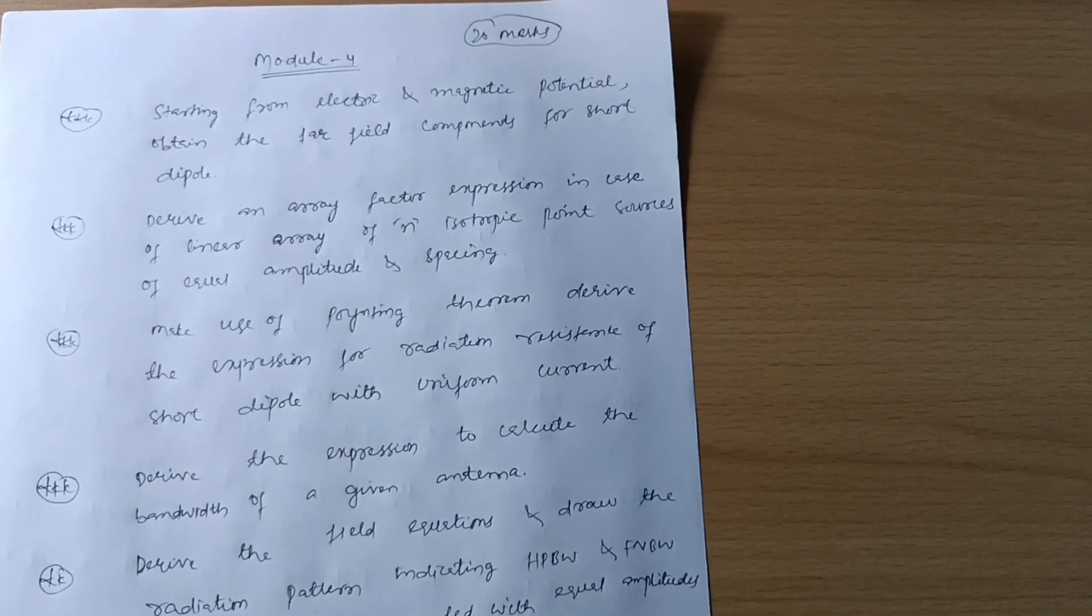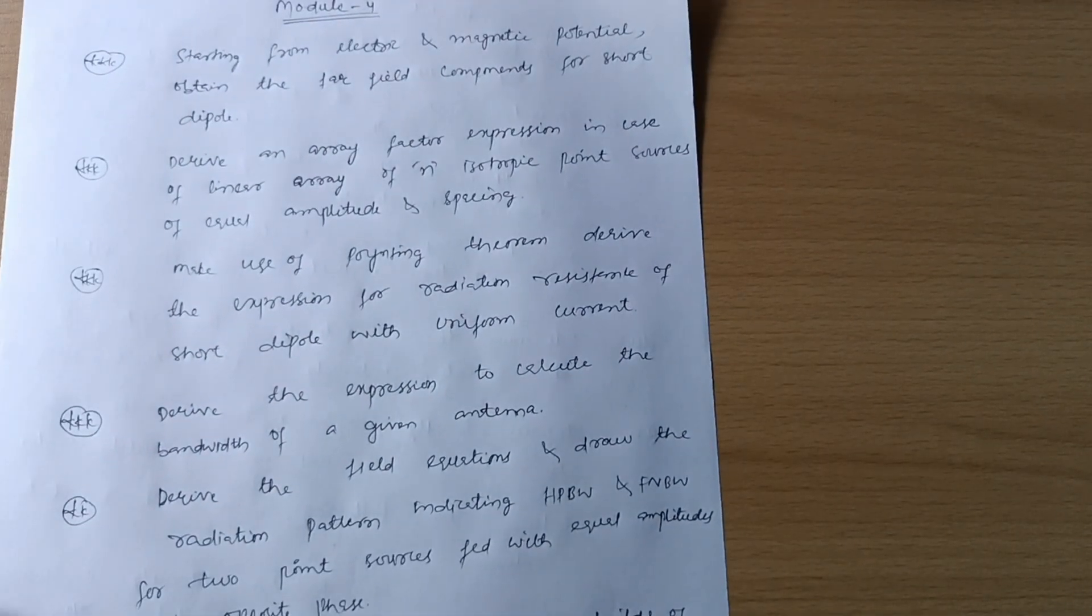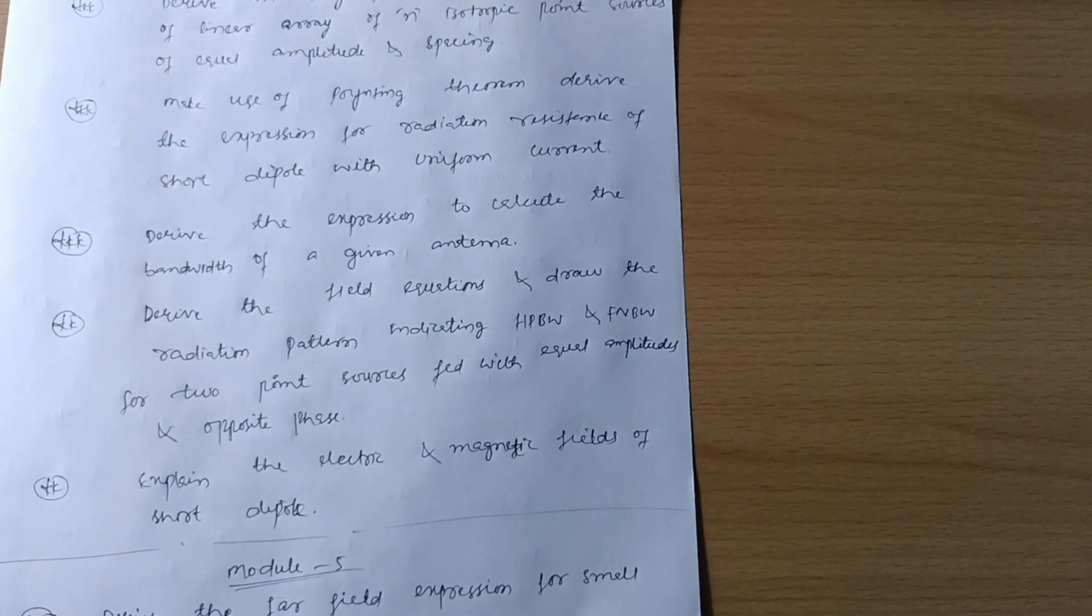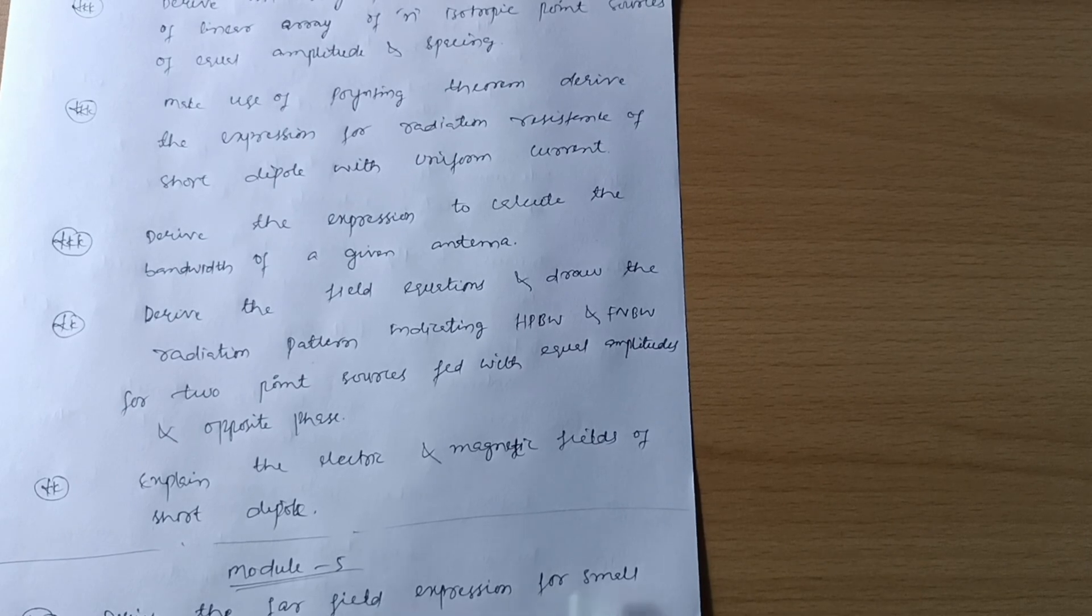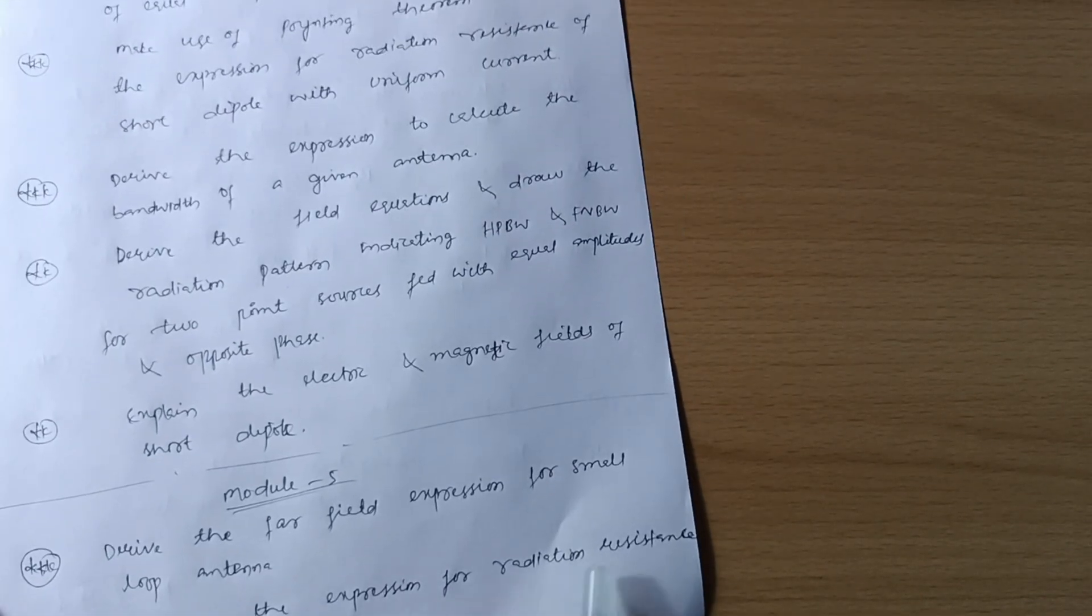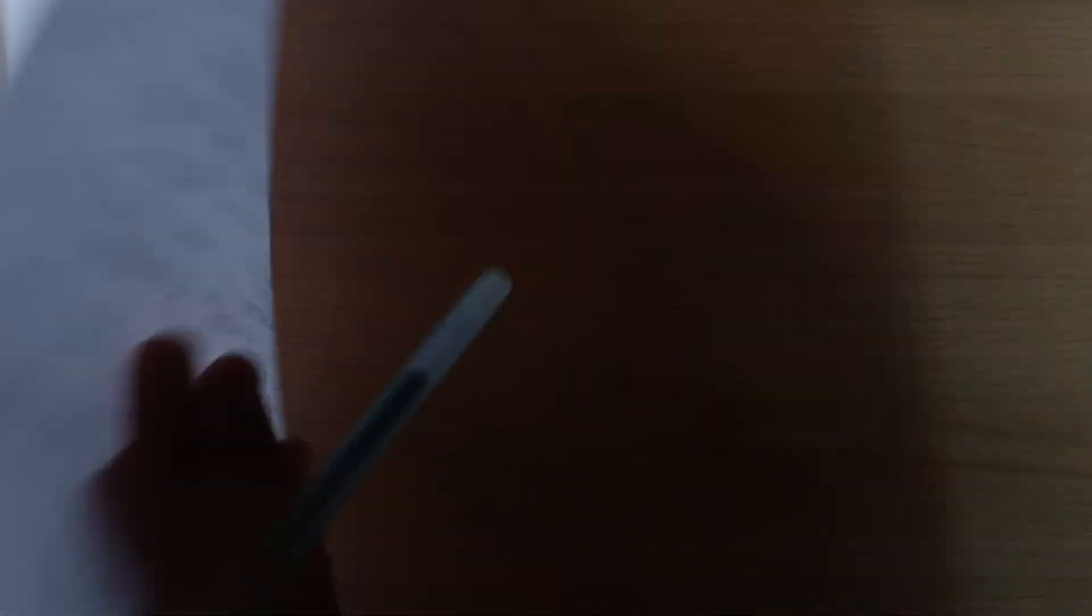Next is Model 5. Derive the far field expression for small loop antenna. Derive the expression for radiation resistance of loop antenna.